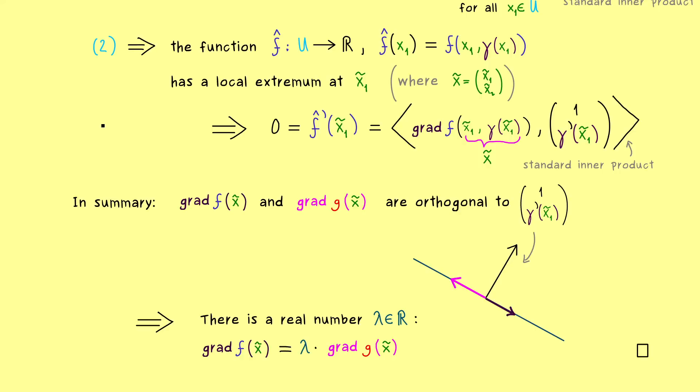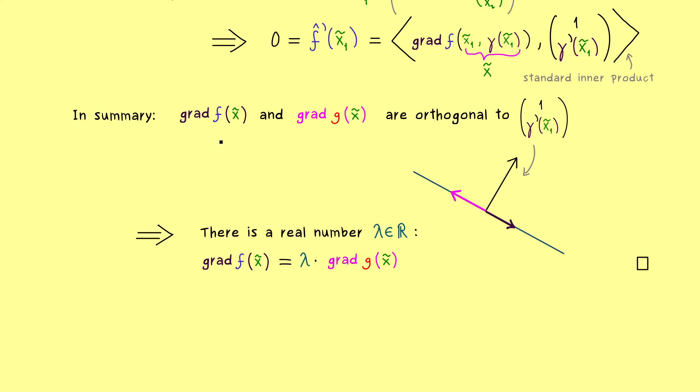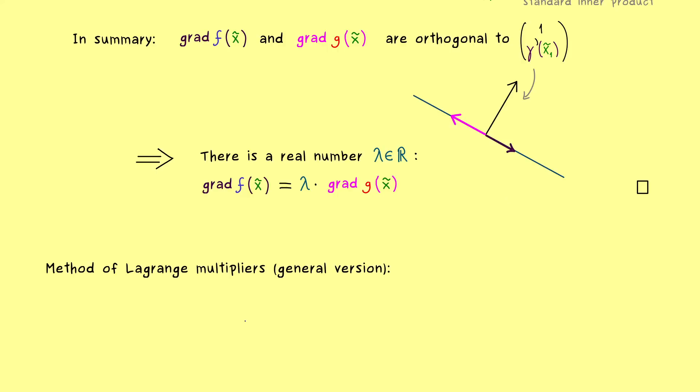Now you've seen that the method of Lagrange multipliers is not magic at all. It immediately follows from the implicit function theorem. And since we have this nice implicit function theorem not only in R² but in the general version, we can also use that to prove a more general version of the method of Lagrange multipliers as well. The idea is exactly the same, but now function f can have n inputs and the constraint g also needs n inputs as well. However, since in Rⁿ we have much more freedom than in R², we can also consider more than just one constraint.